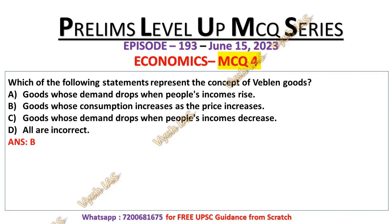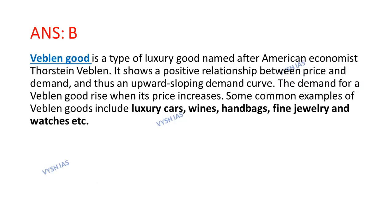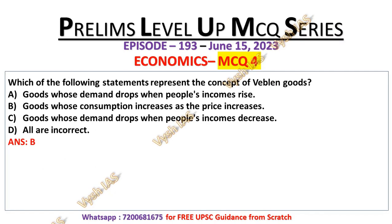The correct answer is option number B, that is goods whose consumption increases as the price increases. Veblen good is a type of luxury good named after American economist Thorstein Veblen. It shows a positive relationship between price and demand, and thus an upward sloping demand curve — the demand for a Veblen good rises when its price increases. Examples include luxury cars, wines, handbags, fine jewellery, watches, etc. That is option number B.